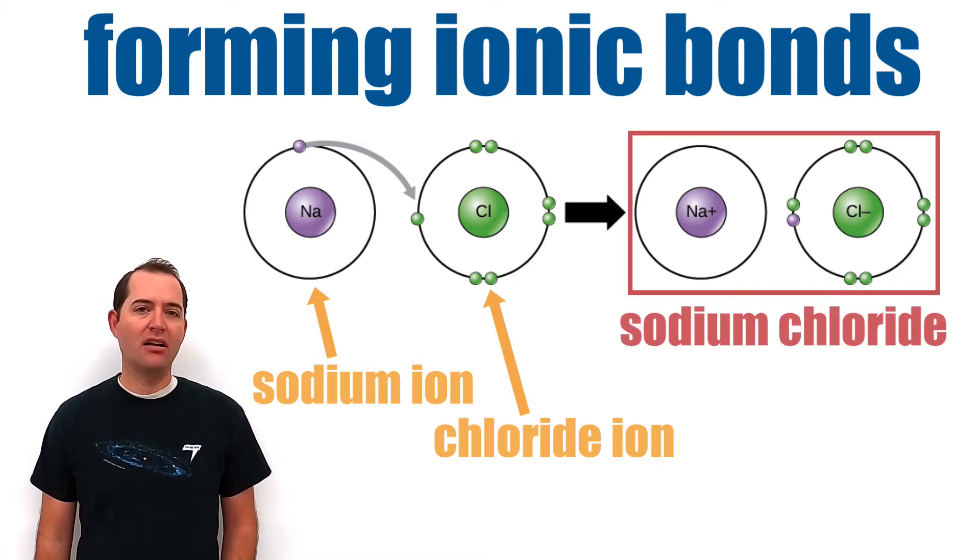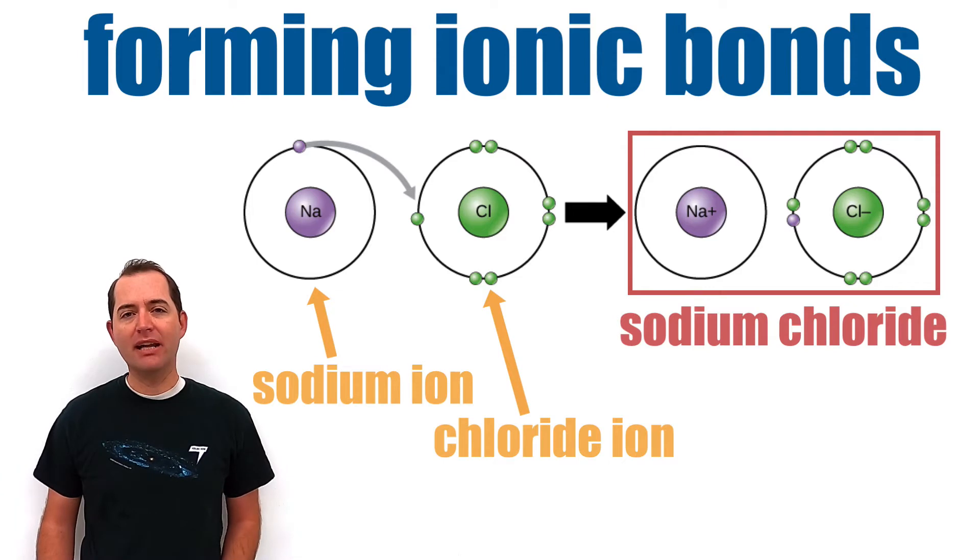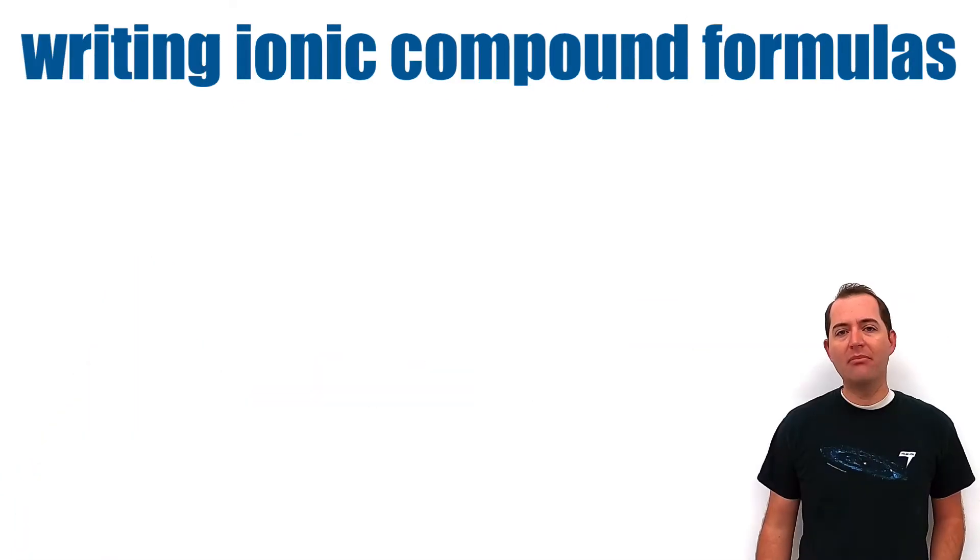Notice that in an ionic compound, the ions keep the same names as they had separately. The positive ion retains its atomic name, and the negative ion ends in "-ide."